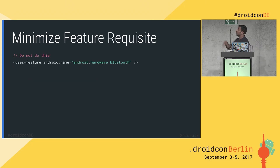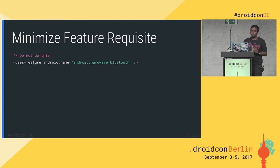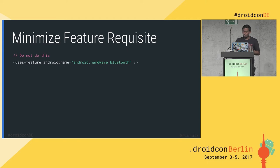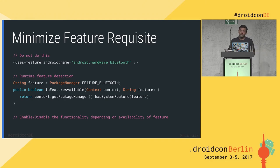The third best practice is minimize feature requests. If you include a hardware feature requirement in your manifest, your app gets filtered out in the Play Store from devices that don't have that hardware. As a library developer, if I include this in my manifest and it gets added to your app during merging, you lose the target audience. The solution is dynamic checking — use PackageManager to check for the system feature, and enable or disable functionality accordingly.